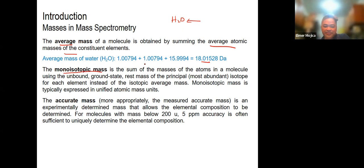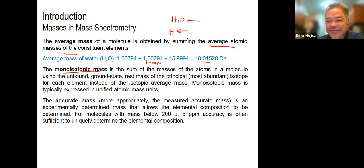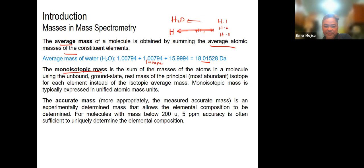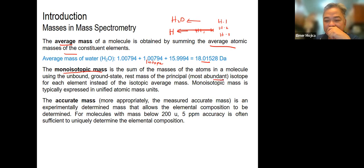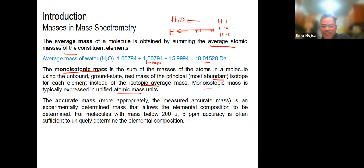There's also what we call monoisotopic mass, which is based on isotopes. For example, hydrogen has three isotopes: H1, H2 (deuterium), and H3 (tritium). The monoisotopic mass is just the sum of the masses of atoms in a molecule using the unbound ground state rest mass of the most abundant isotope for each element, expressed in unified atomic mass units.